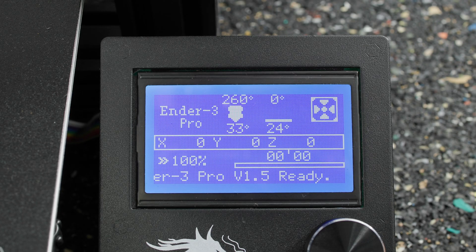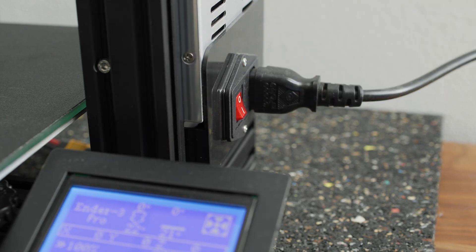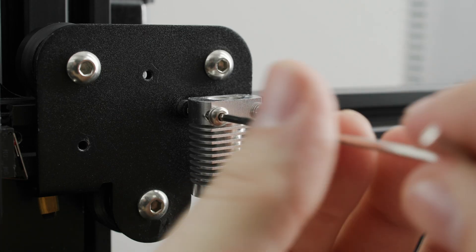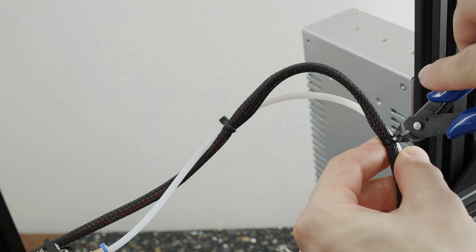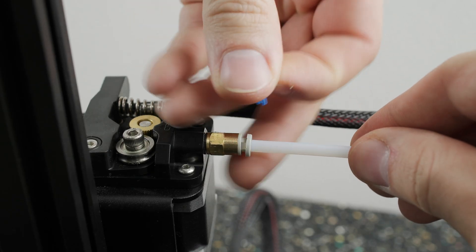Let the hotend cool down and turn off the printer before continuing. Now remove the heatsink from the X-axis carriage. Remove the remaining zip ties and pull the entire PTFE tube out of the extruder.